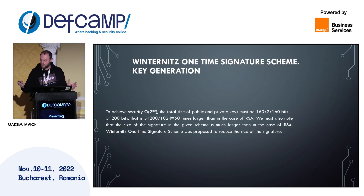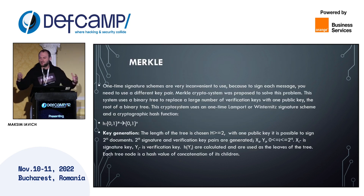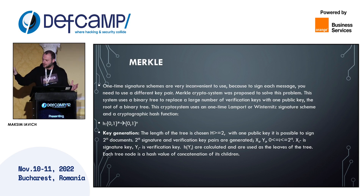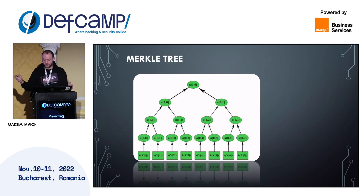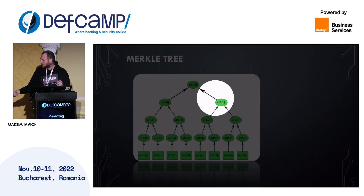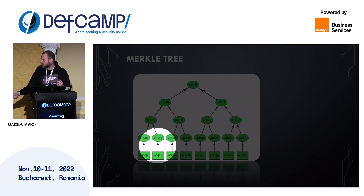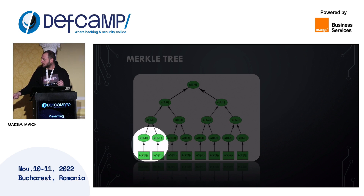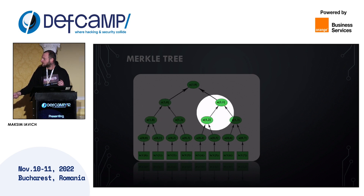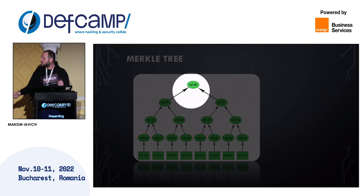The signature from Lamport-Diffie is very long, so the Winternitz one-time signature scheme was provided to reduce the signature size. But one-time signature schemes are always a problem because we need a new key for every message signed. Merkle offered the scheme based on a binary tree. Down at the leaves are the verification keys — they are hashed to get the leaf nodes. Upper nodes are obtained by concatenating and hashing pairs of lower nodes, and this process continues up to the root.